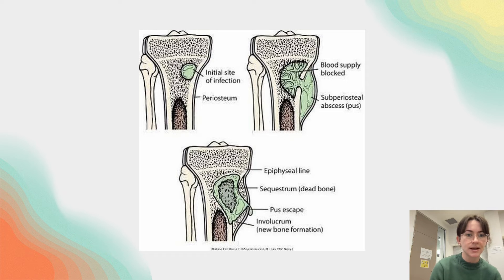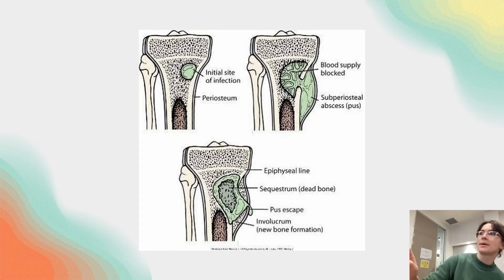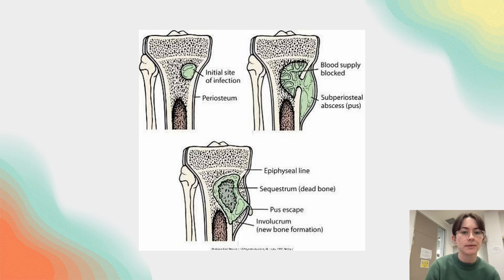This image demonstrates the progression of infection: the initial site can develop a subperiosteal abscess, the sequestrum forms with the involucrum around it, and you can also see the draining sinus tract with pus.